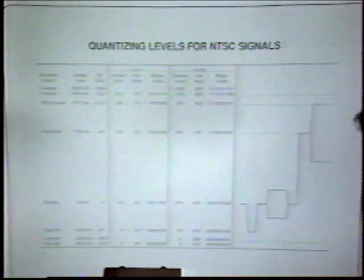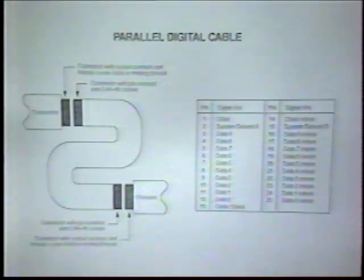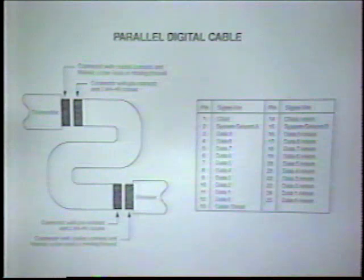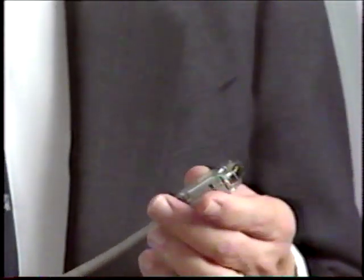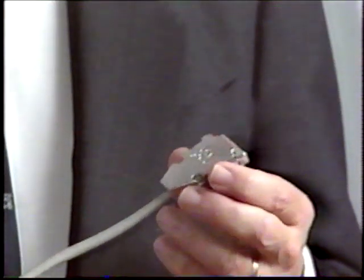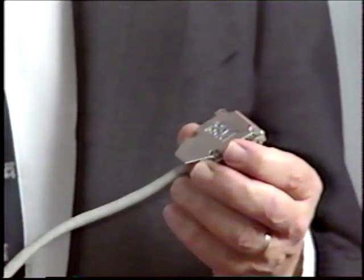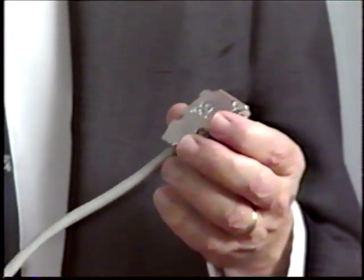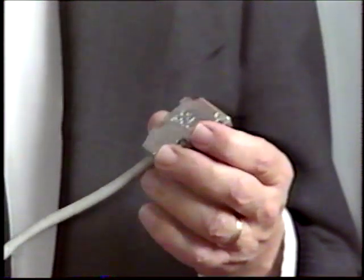This chart shows the connections for the parallel digital cable. Note that it's a 25-pin connector on each end, and that there are 11 twisted pairs — 10 for the data and one for the clock. The 25-pin connector is rather large; if you had 100 of these on the back of a routing switcher, obviously it's going to take up a lot of space.